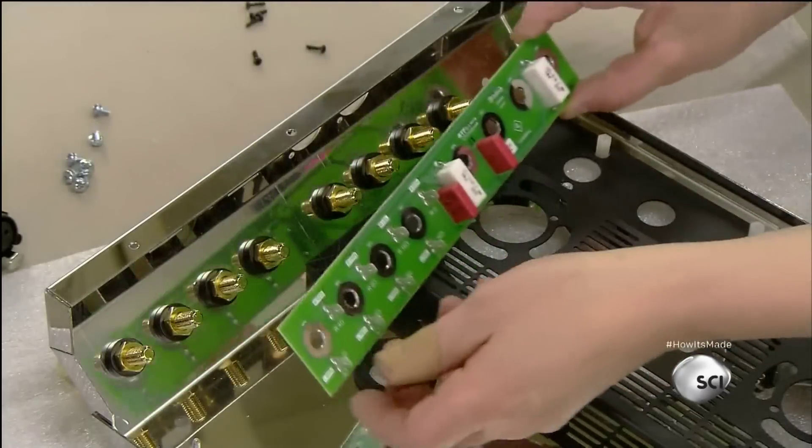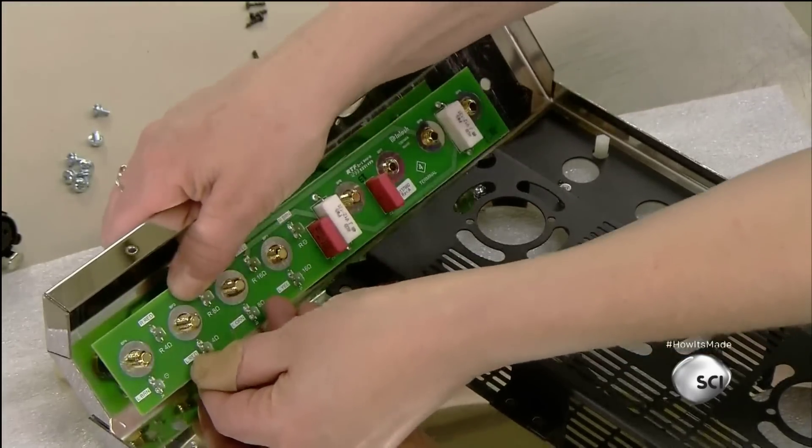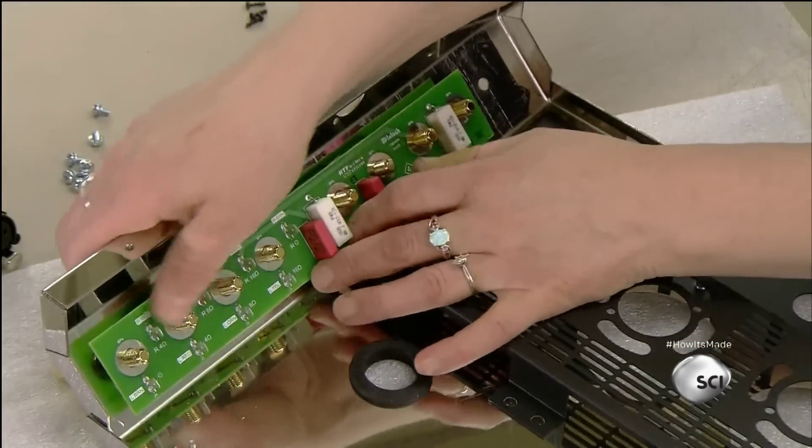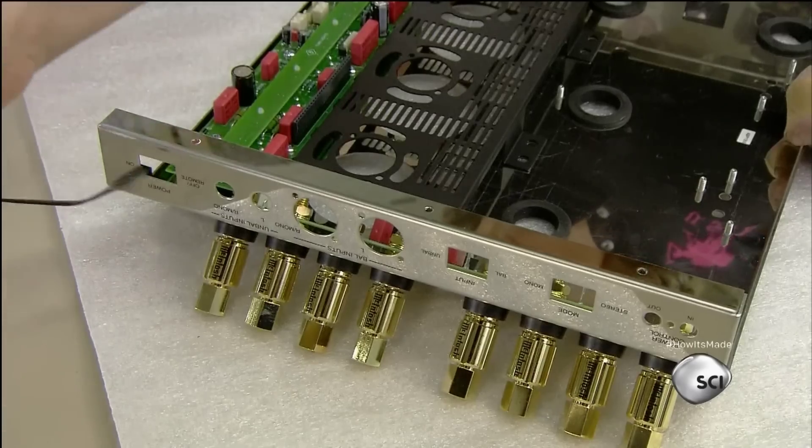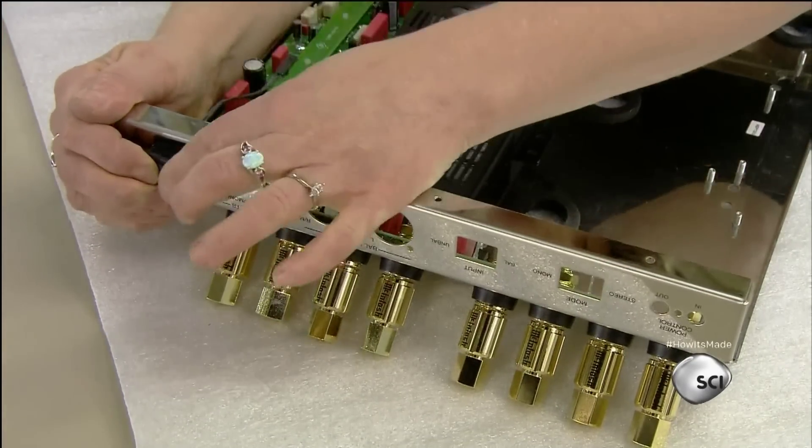The terminal circuit board, installed next, carries the amplified signal from the main circuit board to the speaker terminals. They install and connect the power switch and the circuit board for the vacuum tube illumination. This indicates the tube's status.